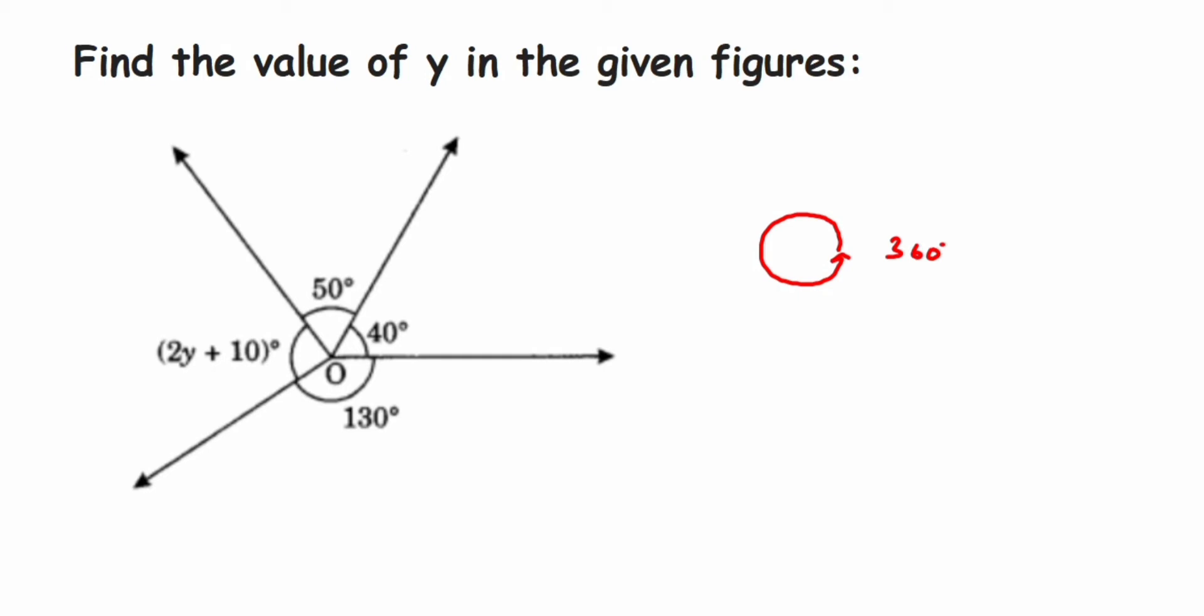Here also, suppose this is my starting point. If I add up all these angles and I'll come back to this original point again, if I add up all this it should be equal to 360 degrees. It's called complete angle, so I'm going to use this property to find out.